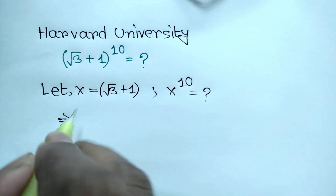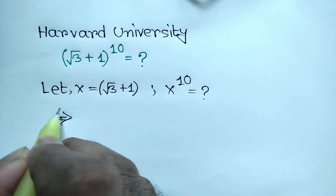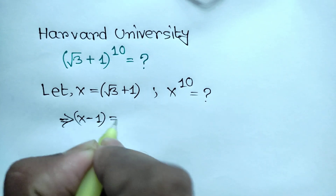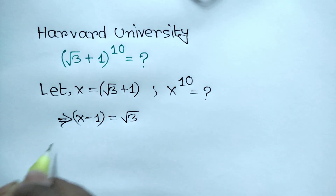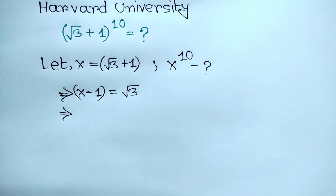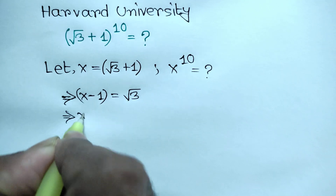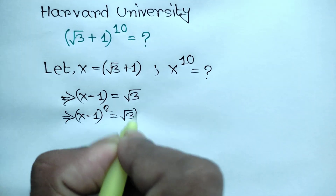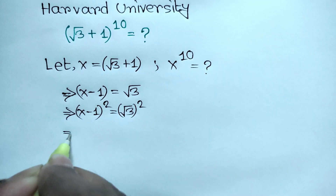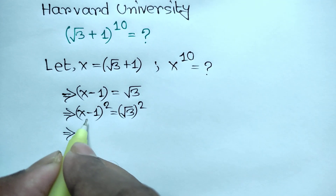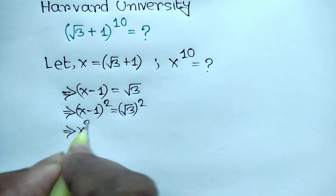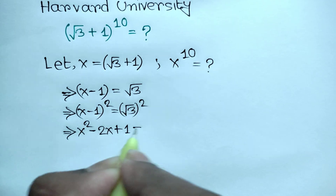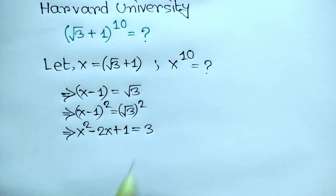Taking the positive 1 to the left side, we get x minus 1 is equal to square root of 3. Now squaring both sides, we can write x minus 1, whole square, is equal to square root of 3, whole square. Using the algebraic formula, we get x squared minus 2x plus 1 is equal to 3.